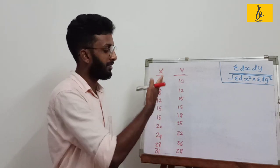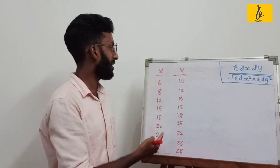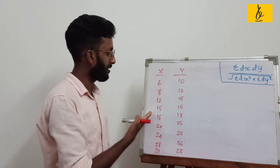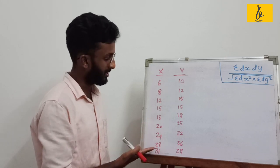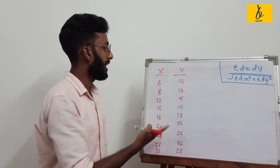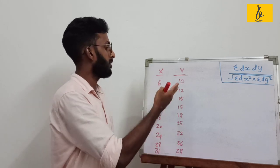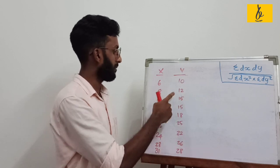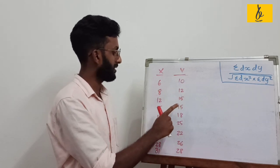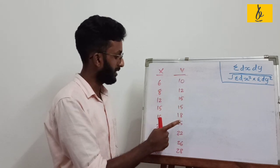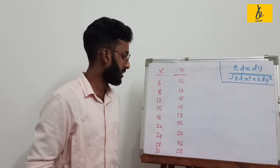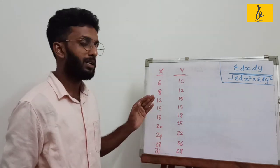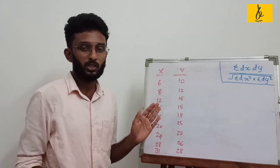That is the data. The two variables are bivariate data. x values are: 6, 8, 10, 15, 18, 20, 24, 28, 30. Then the y variables are: 10, 15, 15, 18, 25, 28, 25, 28. This data is used to calculate Pearson's correlation coefficient.